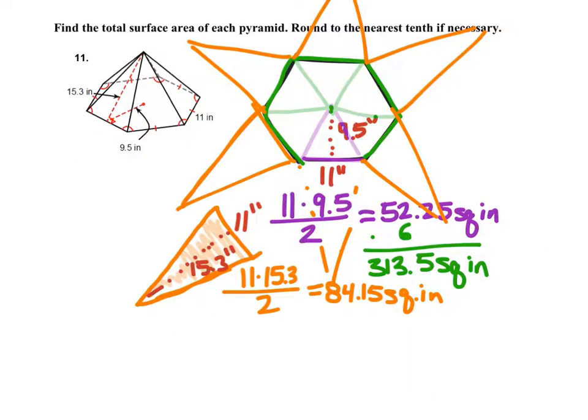Now remember though, if we look back, how many of those triangles are there? Well there's 1, 2, 3, 4, 5, 6 of them, right? So I'm going to multiply this by 6 as well, and this tells me the area of all six of the triangles together, which is actually the lateral surface area. And when I put this into my calculator it gives me 504.9 square inches.